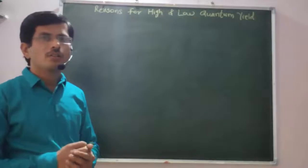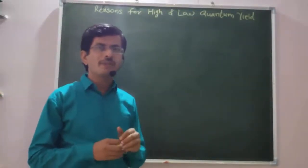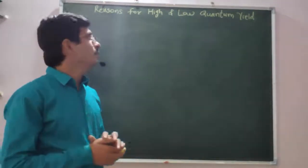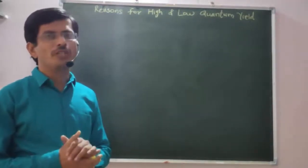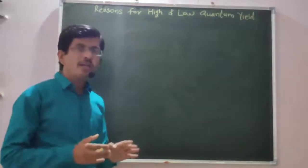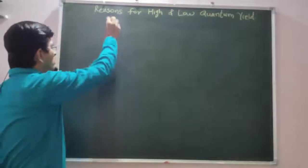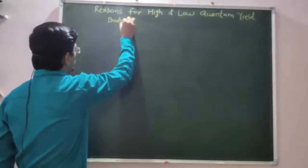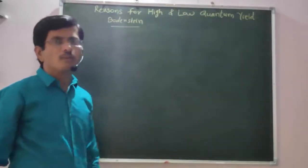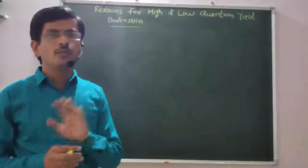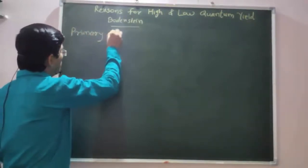Students, in the previous lecture, we discussed the definition of quantum yield and its significance. We discussed that the quantum yield of a photochemical reaction may deviate from unity. To explain this deviation from Einstein's law of photochemical equivalence, scientist Borenstein and others pointed out that photochemical reaction is divided into two parts: primary process and secondary process.